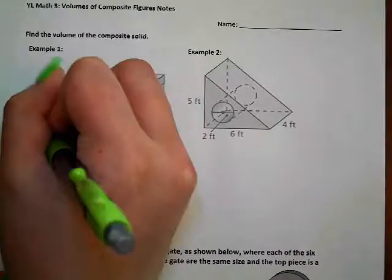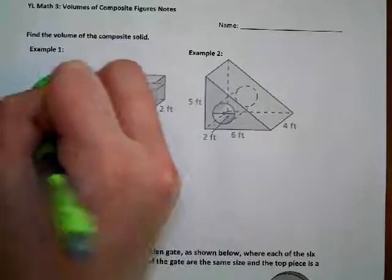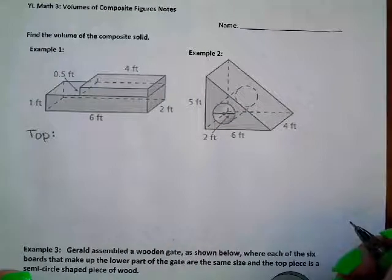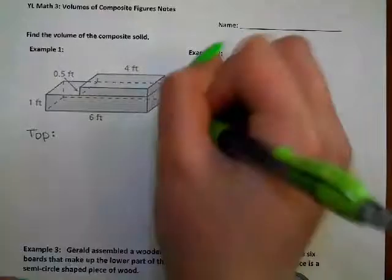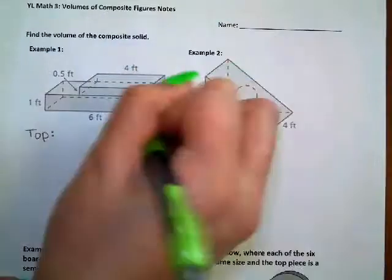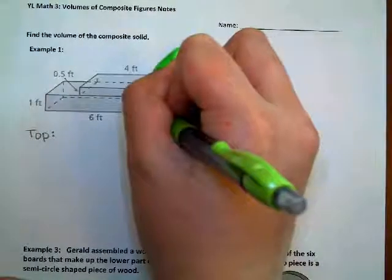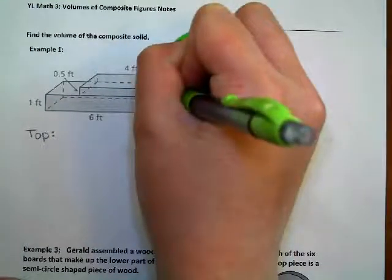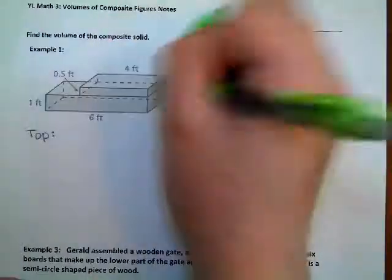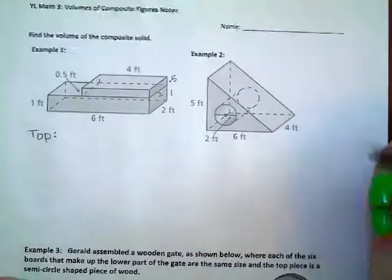Looking at the first example, we're going to have the top rectangular prism and the bottom rectangular prism, and we're going to find both of those volumes and add them together. I'm going to think of these as the base and the height. The base has a length of two, and then the width of the top base is 0.5, and the width of the bottom base is one. All measurements are in feet.